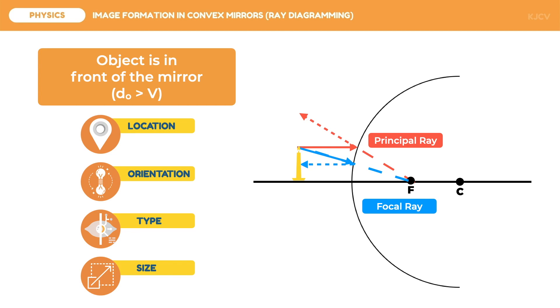Lastly, the third and optional ray, we have the central ray. The incident light here should reach C. However, it is not possible due to reflectivity. Hence, we are just going to draw an imaginary segment connecting the object to the center of curvature. From the mirror, it will reflect following the imaginary ray.